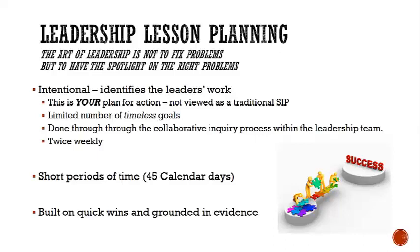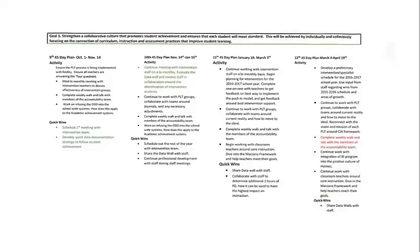What we've provided for you is a sample of the product. This particular plan's 45-day cycle started in October in this example, but it's continuous and ongoing. Their first goal, which drives that work, is around a collaborative culture. We've found in districts that have been using it for three to four years, they actually have a running history of their actions done differently as it relates to these goals.